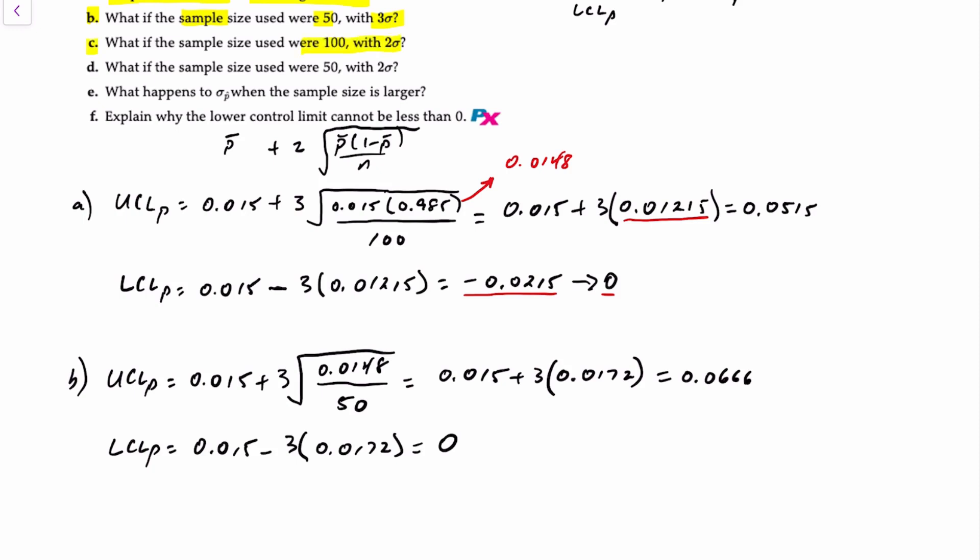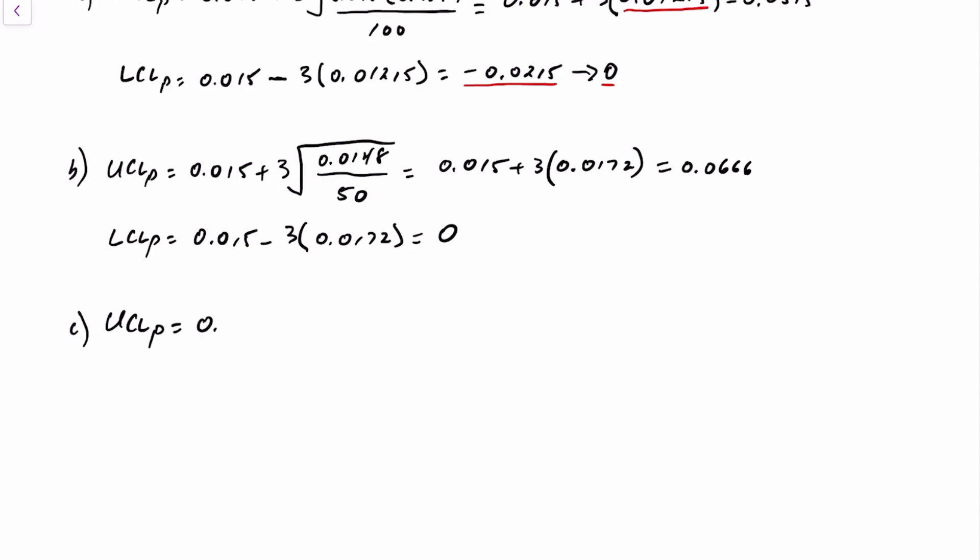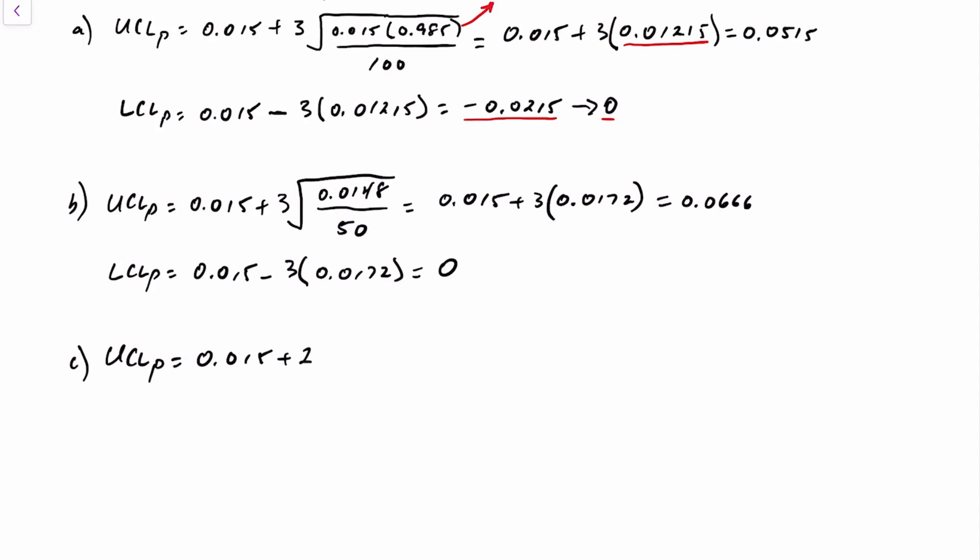Part C: a sample size of 100, 2 sigma. Upper control limit is 0.015 plus 2 this time. Now we can go back and reuse the 0.01215 from requirement A because both the numerator and denominator are the same. That should get you an upper control limit of about 0.0393.